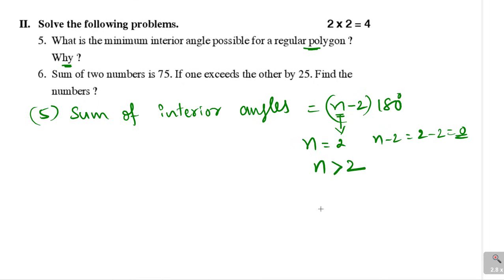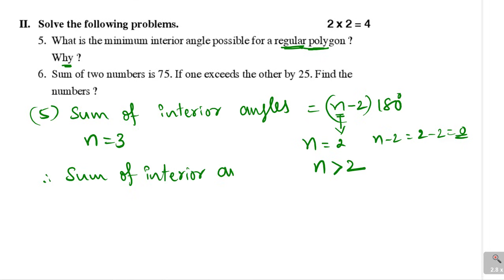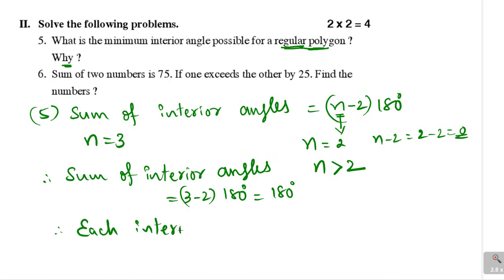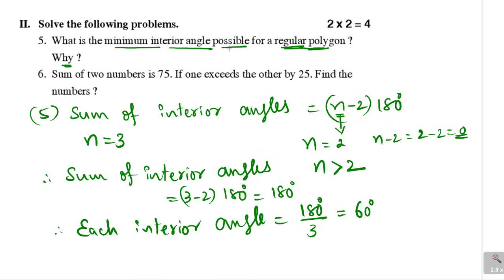So we take n equal to 3. n equals 3 means 3 sides, which is a triangle. Since it is a regular polygon with all sides equal, it is an equilateral triangle. Sum of interior angles equals (3 minus 2) times 180 equals 180 degrees. So each interior angle equals 180 divided by 3, which is 60 degrees. This is the minimum interior angle possible for a regular polygon.